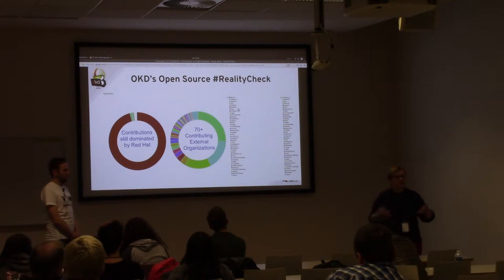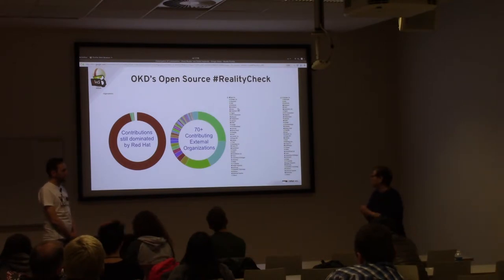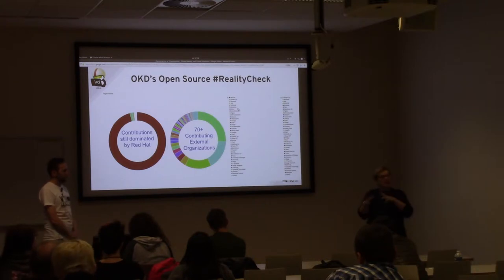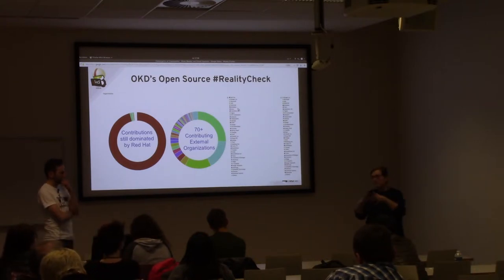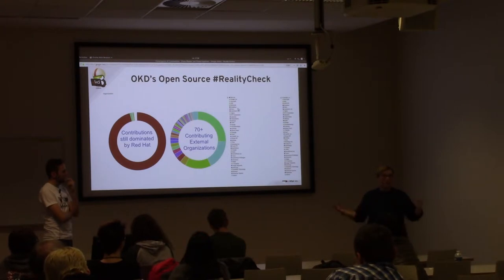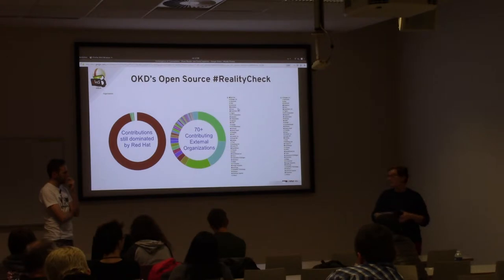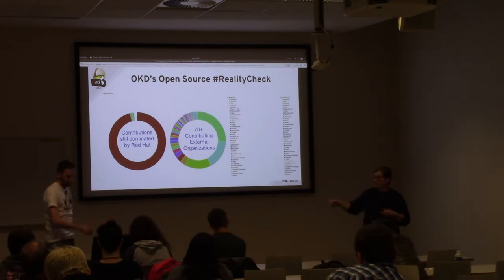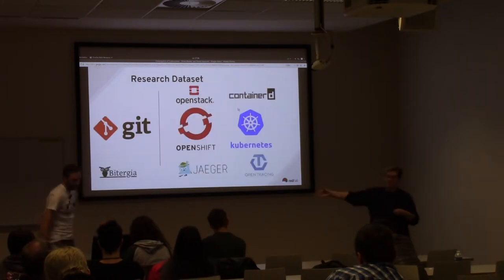We're going to show you where the contributions are going and why we want them to go elsewhere - the network effect and how all of these communities are starting to converge on each other. Over the past two years, we started up a new community model called OpenShift Commons, which is bringing in users, contributors, and upstream project leads into a peer-to-peer network. But first, a word from our toolmaker.